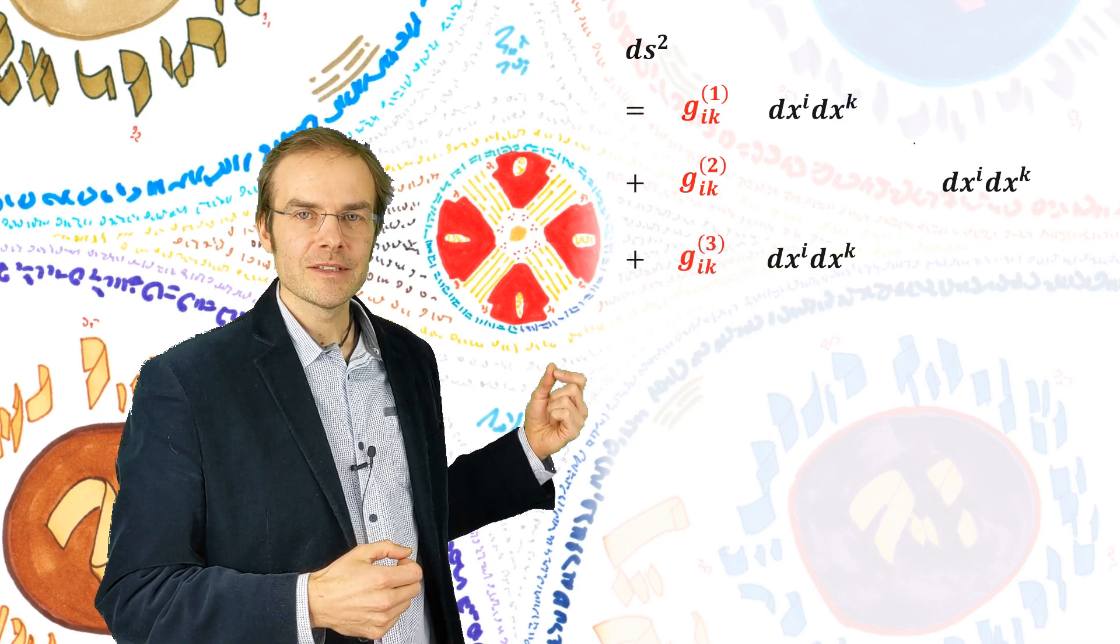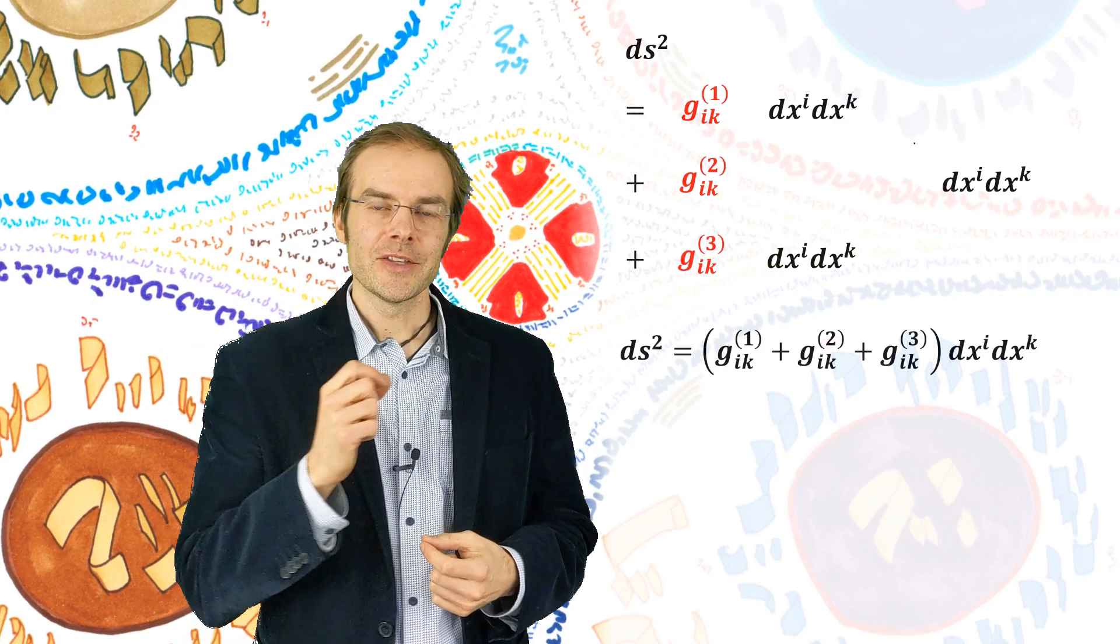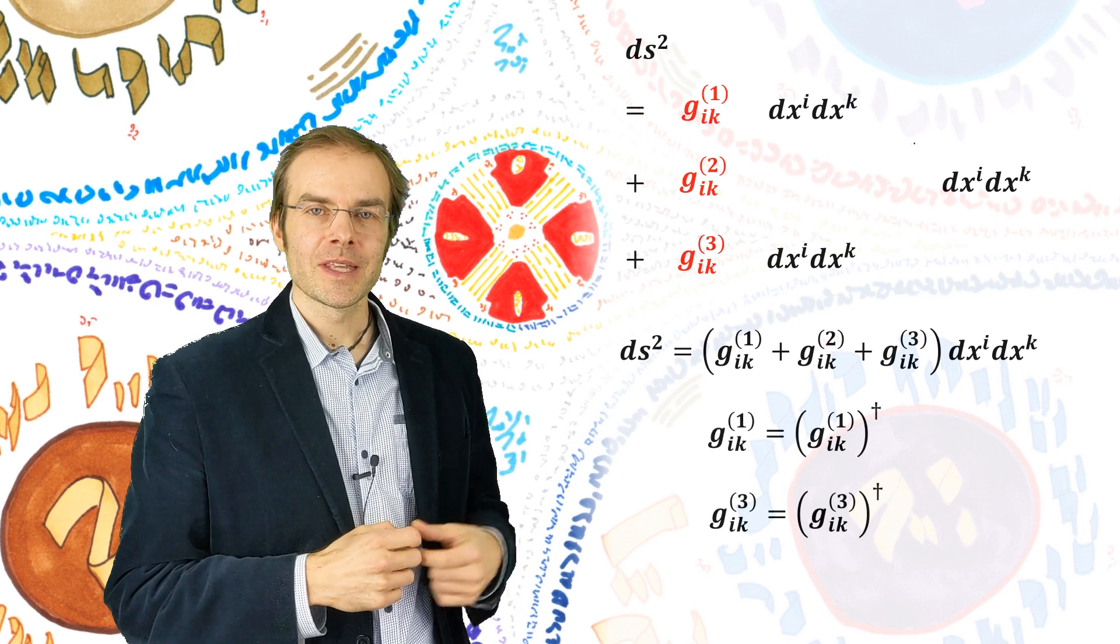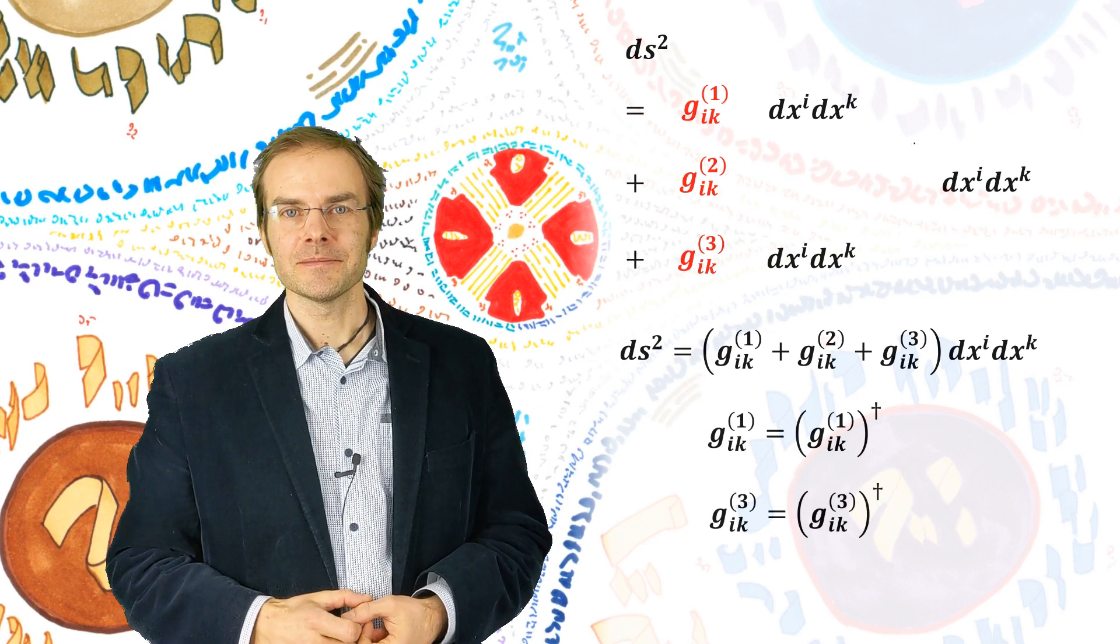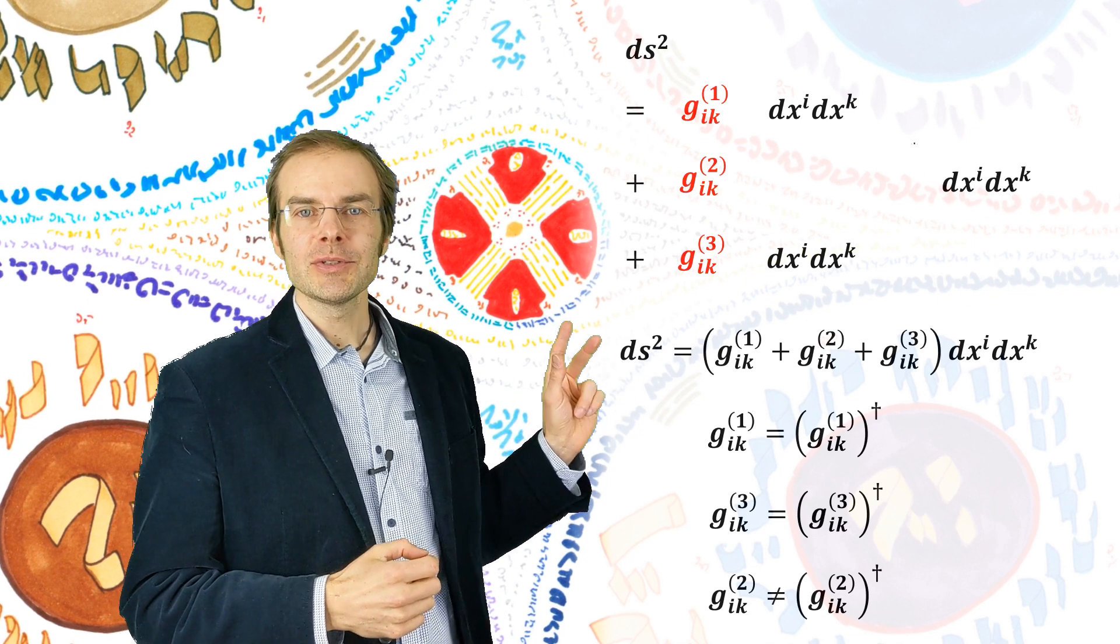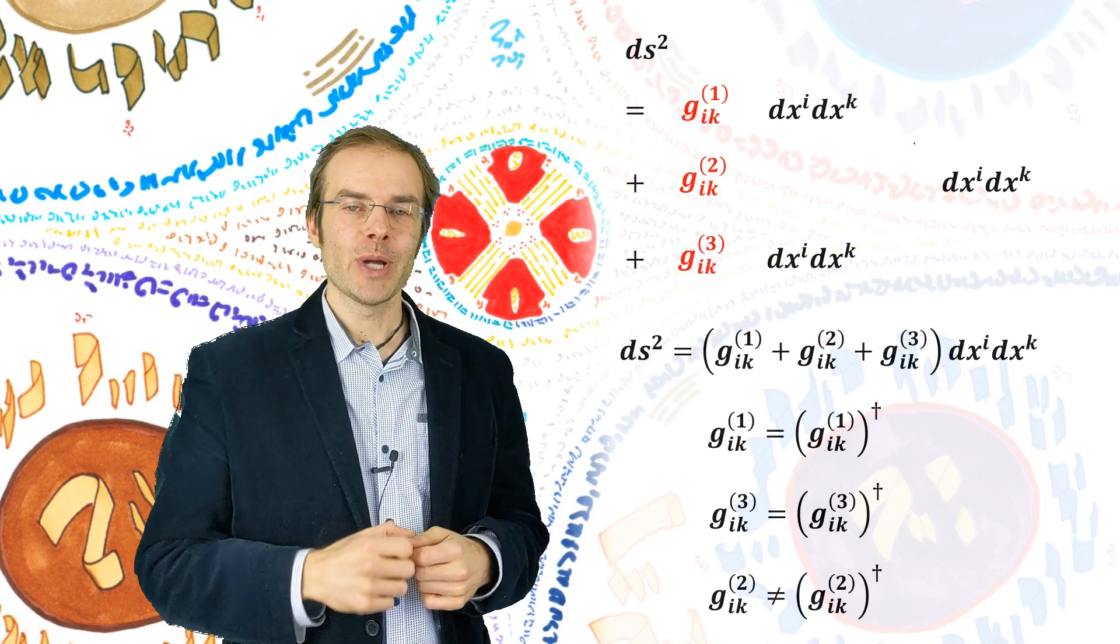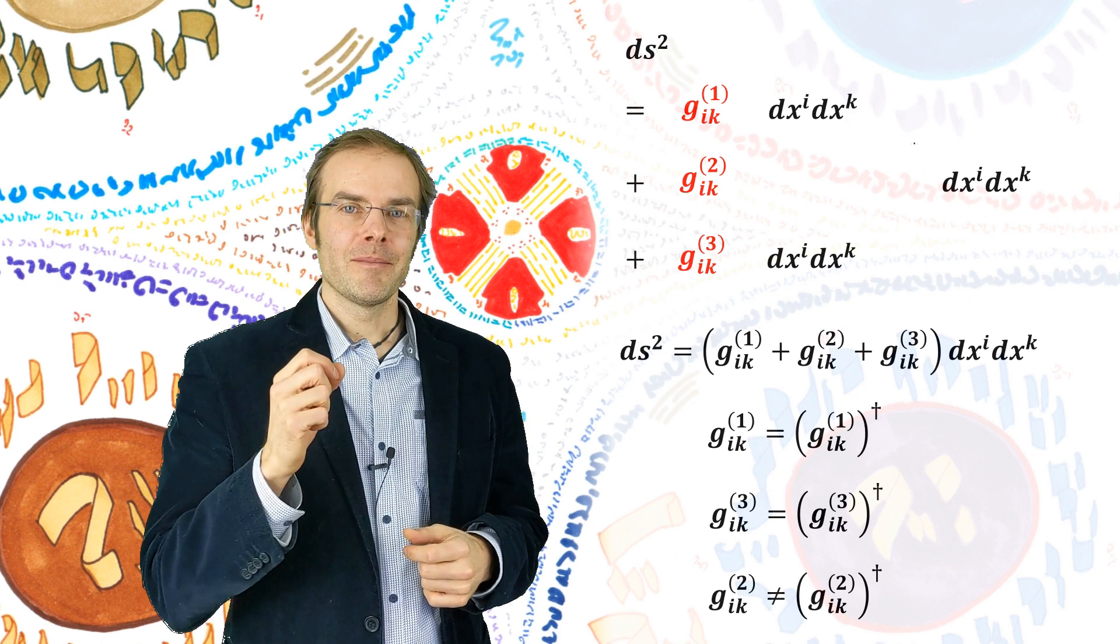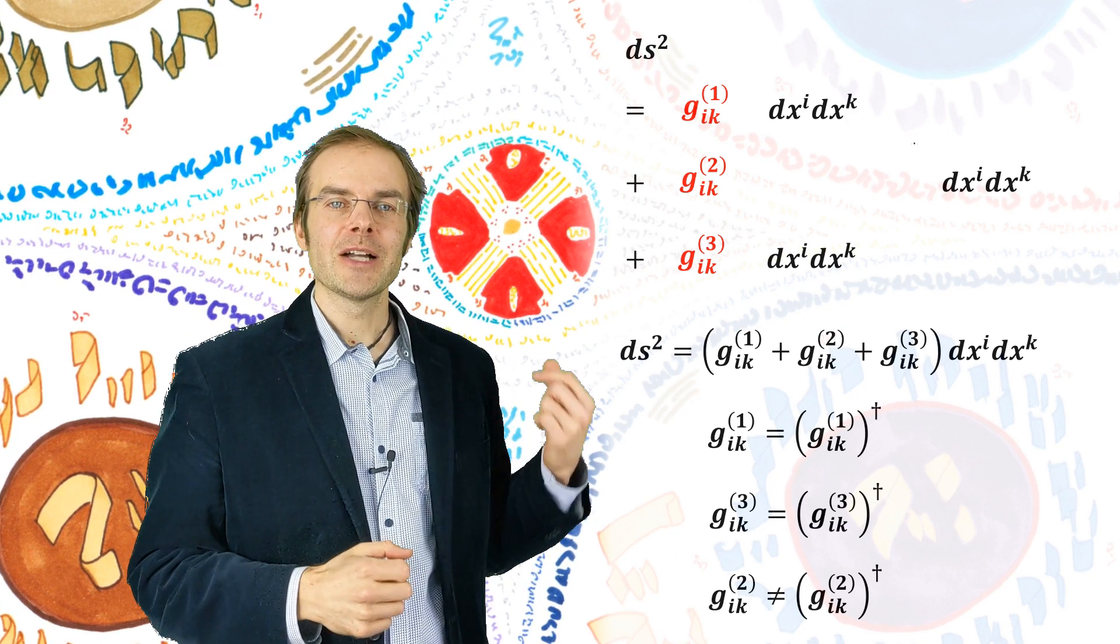If you play with the indices, you can show that g1 is Hermitian as well as g3 is. The more tricky part is the middle one, because if you multiply it out, you obtain something that is Hermitian as well. But that's not necessarily true for this partial tensor g2.